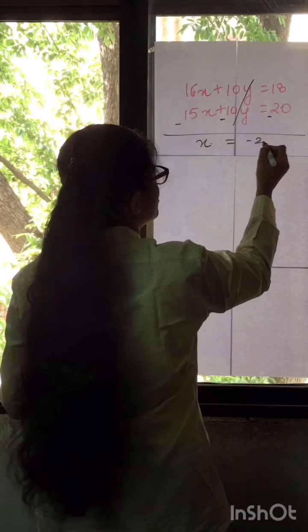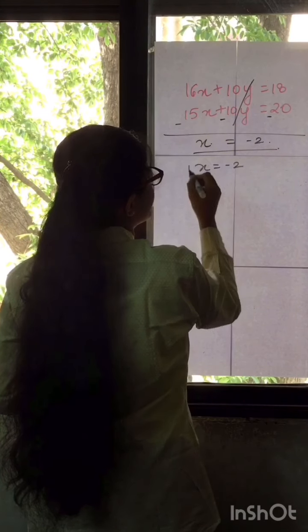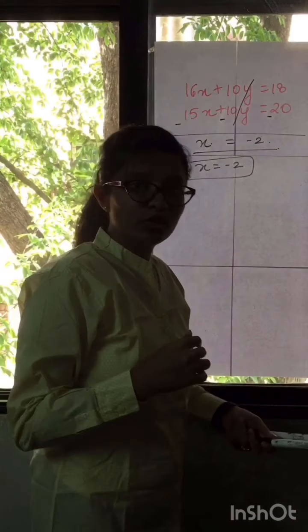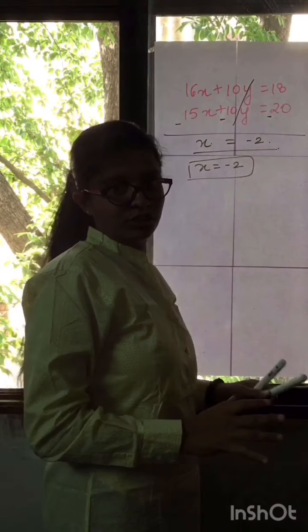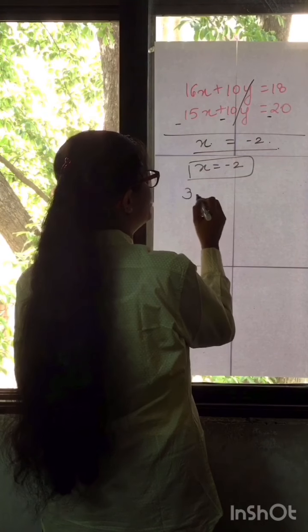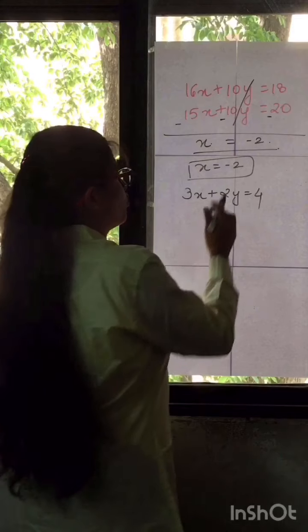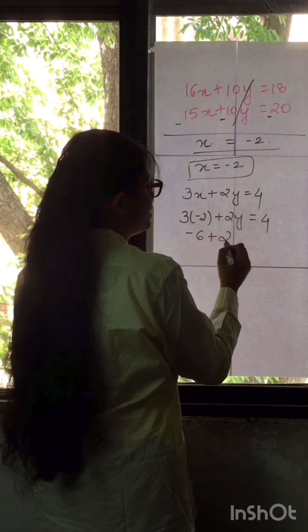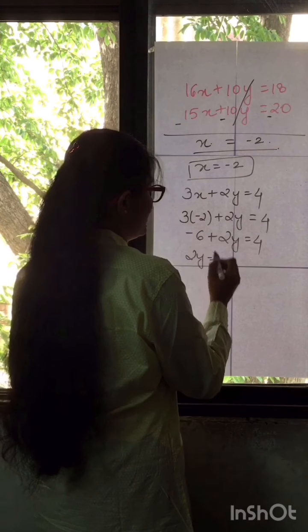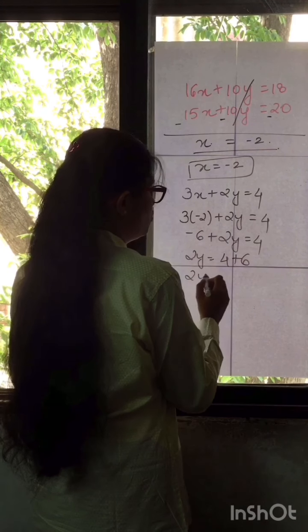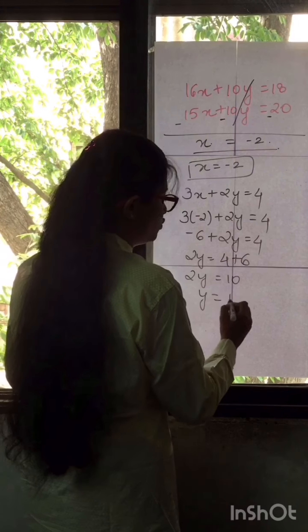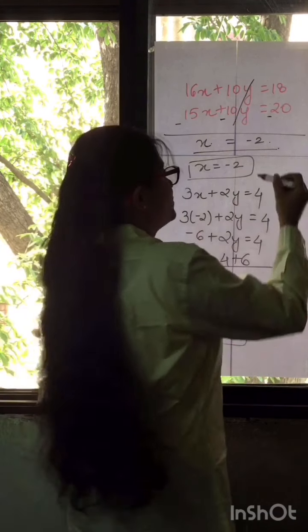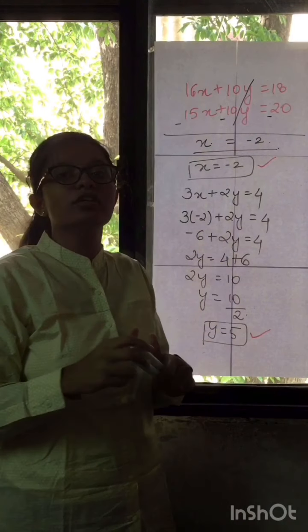Subtracting, the signs change: 16x minus 15x gives x, and 18 minus 20 gives minus 2. So x equals minus 2. As explained in the last video, once we have one variable's value we can find the other. Substituting x equals minus 2 into the second equation 3x plus 2y equals 4: 3 times minus 2 plus 2y equals 4, so minus 6 plus 2y equals 4, giving 2y equals 10, and y equals 5.